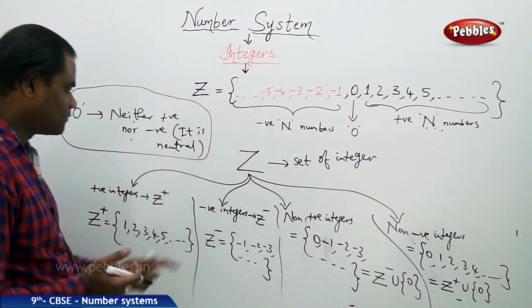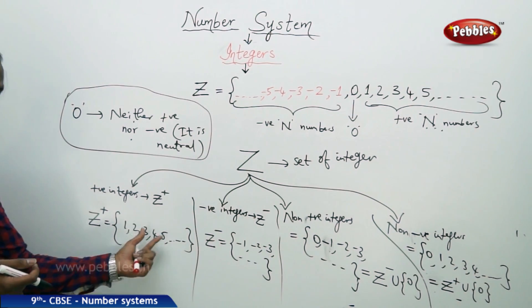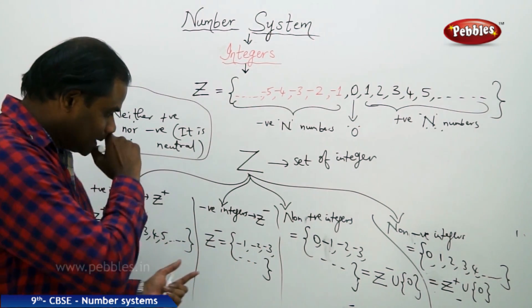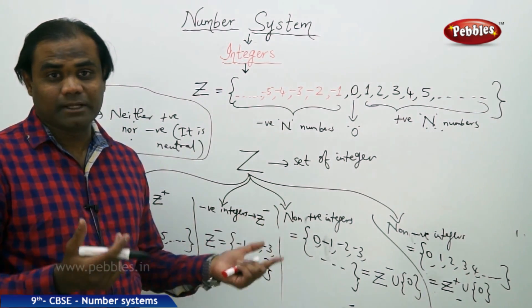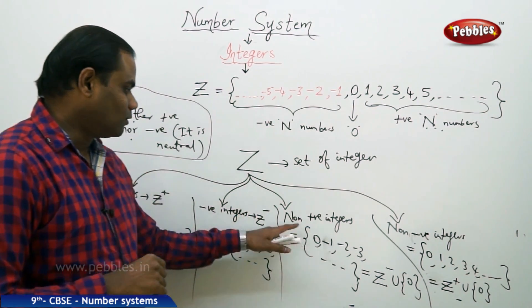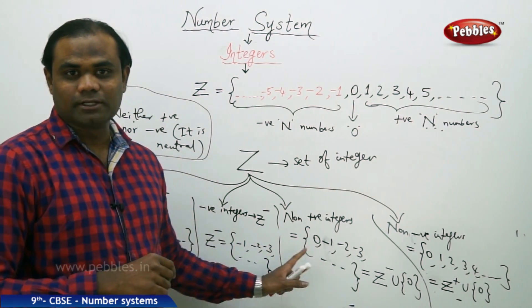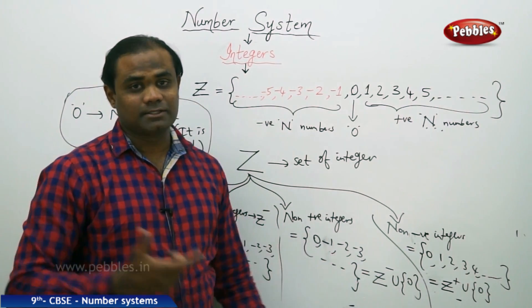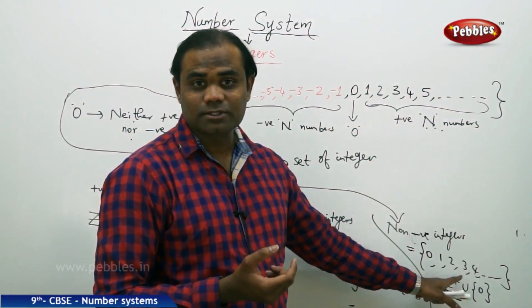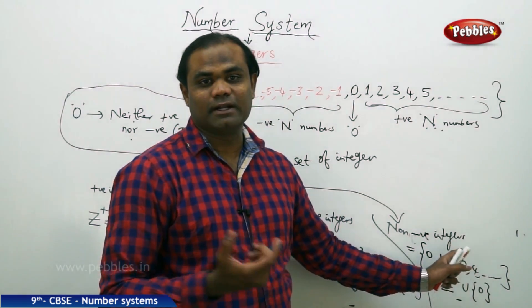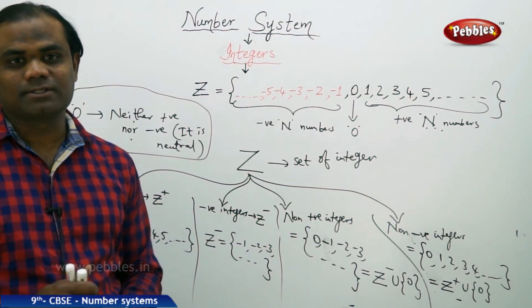Therefore, we have four classifications for Z: positive integers denoted by Z plus which includes 1, 2, 3, 4, 5 till infinity; negative integers denoted by Z minus which includes minus 1, minus 2, minus 3, and so on; non-positive integers which is all the negative integers including 0, denoted by Z minus union {0}; and non-negative integers which includes all the positive integers and 0. This is how we understand the different classifications of the set of integers Z.